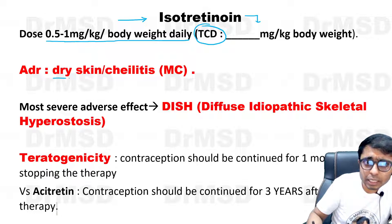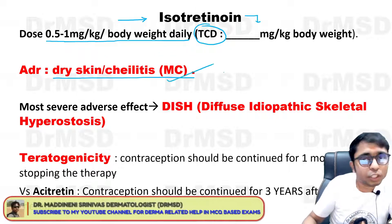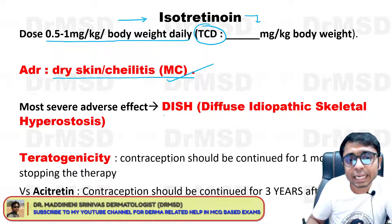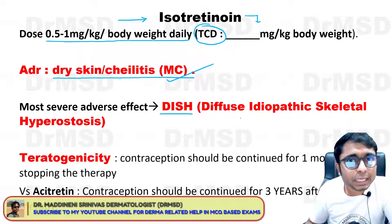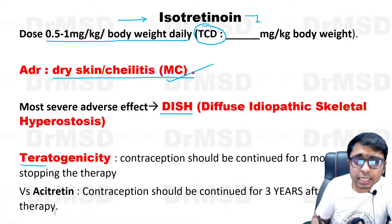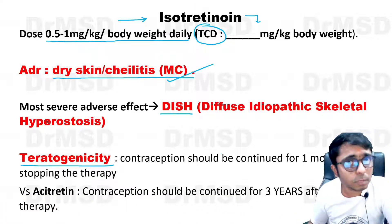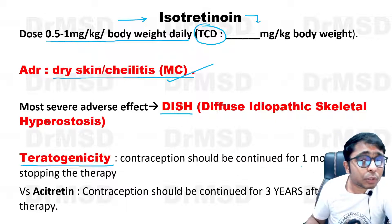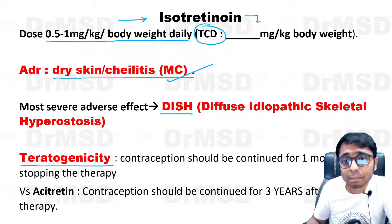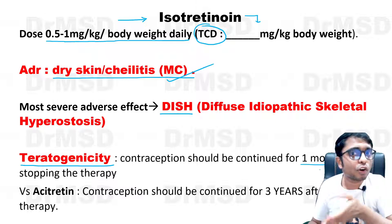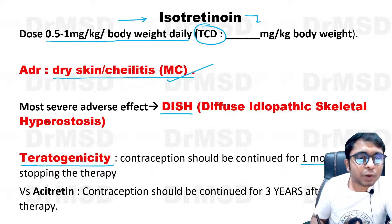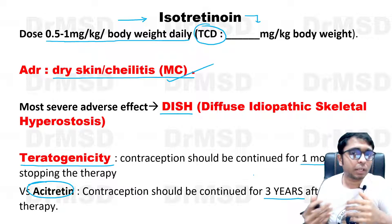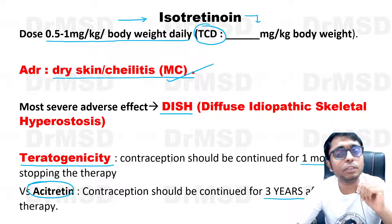I hope you all know that the adverse effects include xerosis and cheilitis. The most severe, most dreaded complication is DISH — diffuse idiopathic skeletal hyperostosis — and of course, teratogenicity. Because of this teratogenic potential, we have to continue barrier contraception for at least one month after discontinuation of isotretinoin. There is one more drug, acitretin, which needs three years of continuation of contraceptive measures.